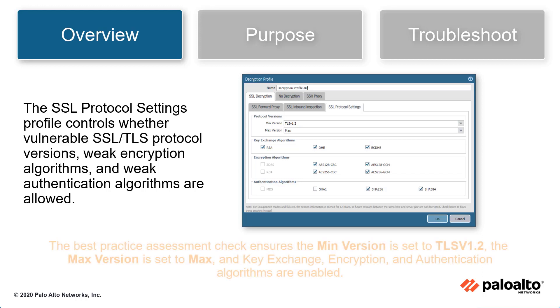The SSL protocol settings best practice check ensures the minimum version is set to TLS version 1.2 and the maximum version to max. It also ensures that safe key exchange, encryption, and authentication algorithms are enabled.